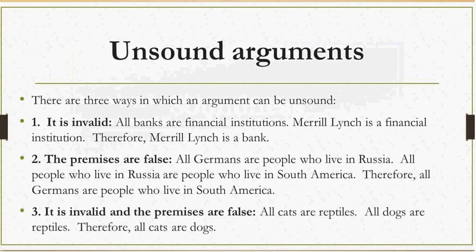The last way an argument can be unsound is if it is both invalid and the premises are false. Here's an example: All cats are reptiles. All dogs are reptiles. Therefore, all cats are dogs. To understand why this is invalid, look back at the Merrill Lynch argument, which has a similar structure — the person overlooks the fact that some categories can be placed in different positions. And of course the premises are false. So this is our third way to have an unsound argument.